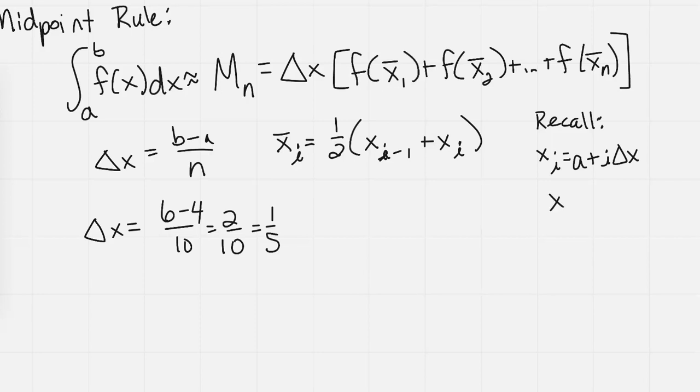So x sub 1, or actually x sub 0, because of our x sub i equals a plus i times delta x. Our x sub 0 would be 4 plus 0 times 1 fifth, which is 4. x sub 1 would be 4 plus 1 times that 1 fifth, which would be then - before I think I was putting it in fractions. Let's go ahead and put this in decimals because 1 fifth is just 0.2, so this would be 4.2.